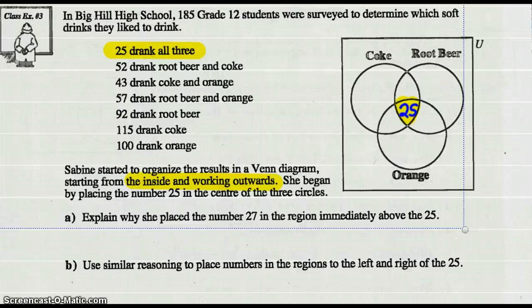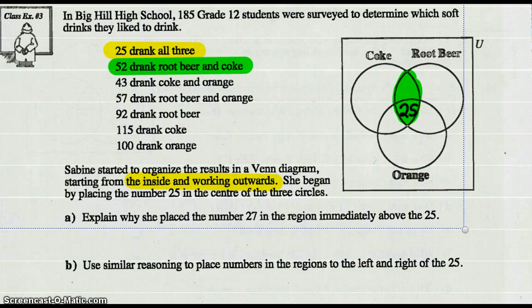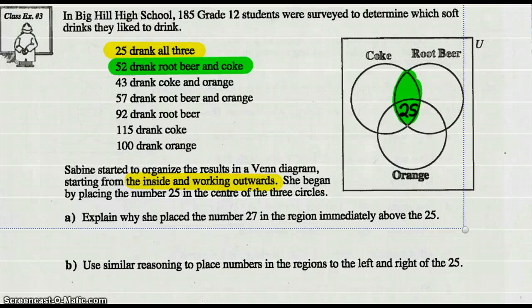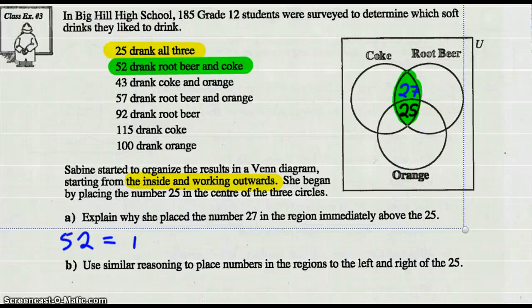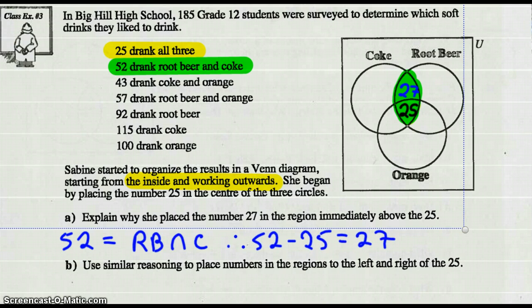25 drank all three. Now working outward: 52 drank root beer and Coke. There's already 25 in that intersection, so 52 minus 25 gives us 27 — that goes directly above the 25, completing the root beer and Coke intersection. Similarly, 43 drank Coke and orange — 43 minus 25 gives us 18, which goes to the left of 25. And 57 drank root beer and orange — 57 minus 25 gives us 32, which goes to the right of 25.